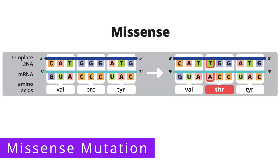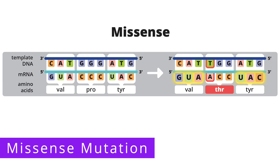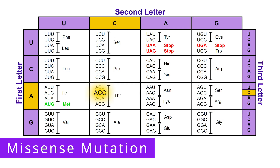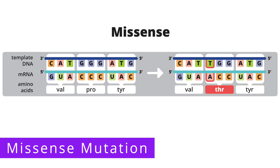Now, let's say that a mutation causes the fourth nucleotide, guanine, to be replaced with thymine. With transcription, the fourth nucleotide in the mRNA strand now becomes adenine as opposed to cytosine. The first and third codons in the mRNA strand did not change, so they still code for valine and tyrosine. However, the second codon did change, and it is now ACC as opposed to CCC. If we look up ACC in the genetic code chart, we see that it codes for threonine instead of proline. So instead of valine, proline, and tyrosine, we now have valine, threonine, and tyrosine.